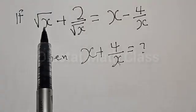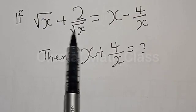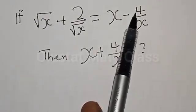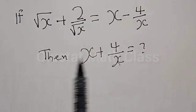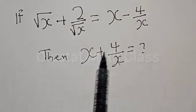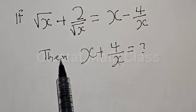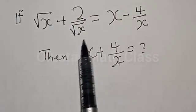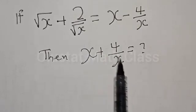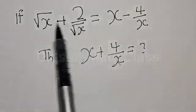If square root of s plus 2 divided by square root of s is equal to x minus 4 divided by x, then what is the value of s plus 4 divided by x? Hi everyone, welcome to my class. In today's class we want to look at how we can quickly find the value of s plus 4 divided by x from this given equation.